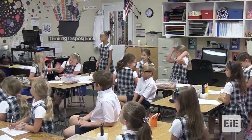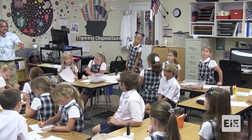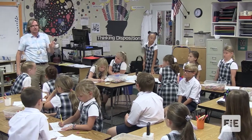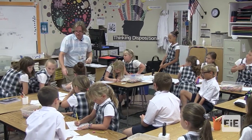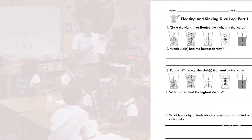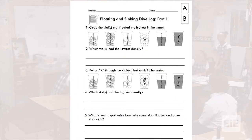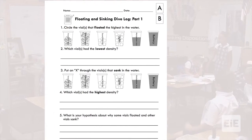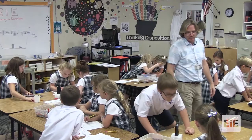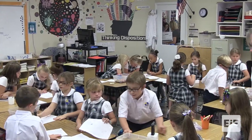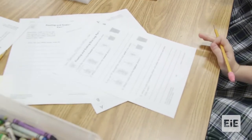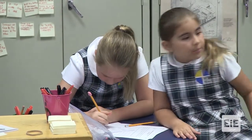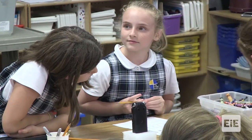So we started with the lights and the battery, and we saw there was one that would float and one that would sink. We learned that the one that sank was more dense than water. So if you look at your sheet right here — circle the vials that floated in the test, or floated the highest in the water. And then which vial has the lowest density? Please fill that out. Take your time, talk amongst yourselves, figure out what that means. You can tell by how much stuff it has inside.